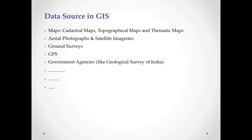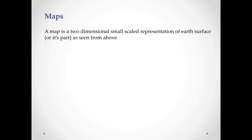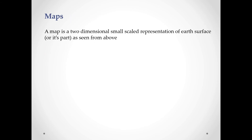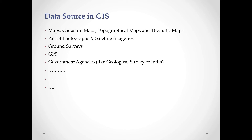Data sources in GIS include maps — cadastral maps, topographical maps, and thematic maps — aerial photographs and satellite imageries, ground surveys, GPS, and government agencies like the Geological Survey of India. These are the primary data sources used in a GIS.